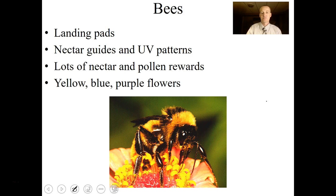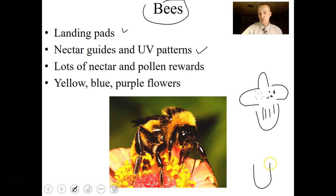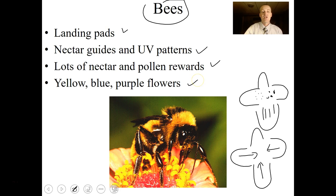Bee-pollinated flowers have landing pads, nectar guides, and UV patterns. Nectar guides are little lines or spots on the petals — like little arrows pointing to where the nectar is. These flowers have lots of nectar and other pollen rewards, and they're often yellow, blue, or purple. Red is not a color insects perceive well, so we don't see many red flowers attracting bees.